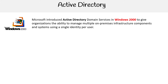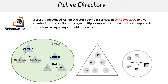Microsoft introduced Active Directory Domain Services in Windows 2000 to give organizations the ability to manage multiple on-premise infrastructure components and systems using a single identity per user. Here's the big architectural diagram that I created. The idea is that you have your enterprise, which is the forest, and these are made up of domains. A domain is a means to host these different directory services, and it's also the means by which people authorize or authenticate to your directory.